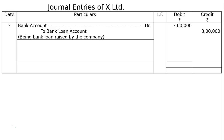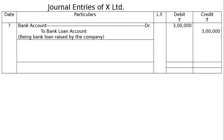Being bank loan raised by the company. Then we placed — not issued — debentures. That is, debenture suspense account debited Rs.4 lakh to 9% debentures account, Rs.4 lakh in the credit. Being 400 9% debentures placed with the bank as collateral security. Total both debit and credit sides: Rs.11 lakhs each.